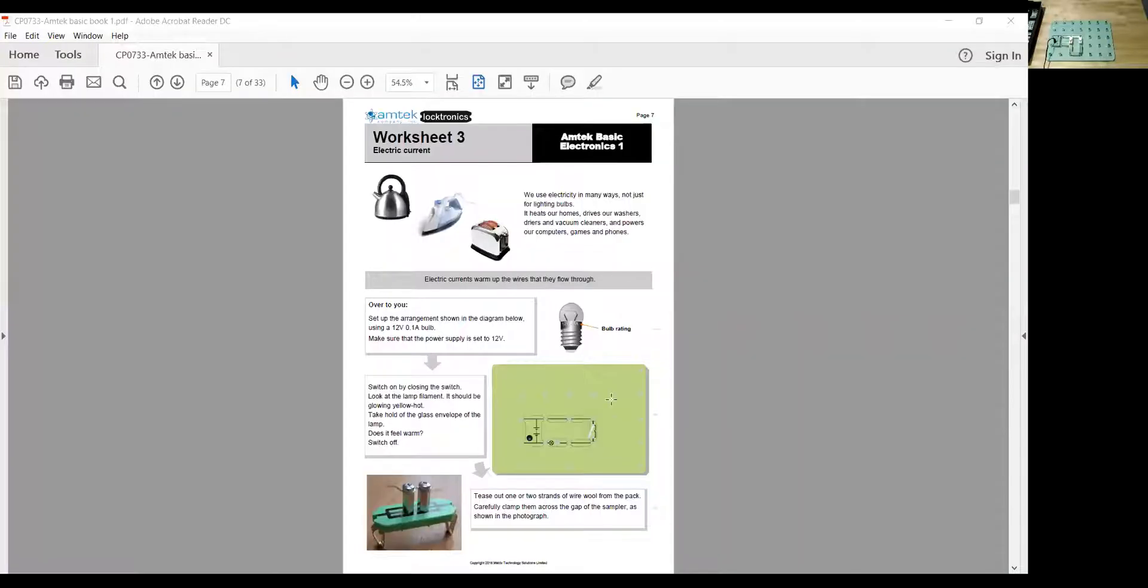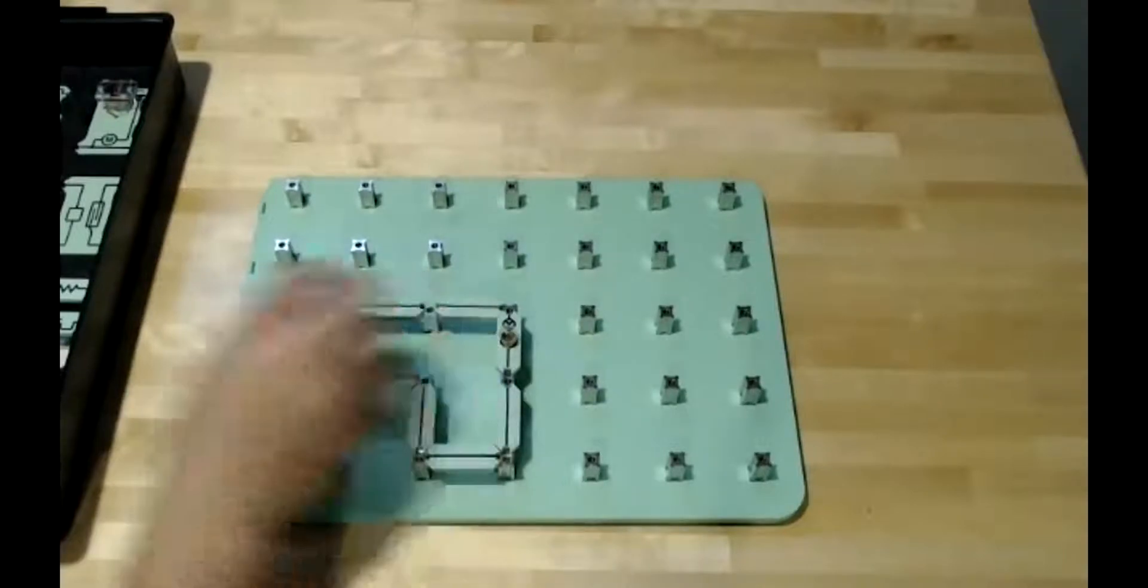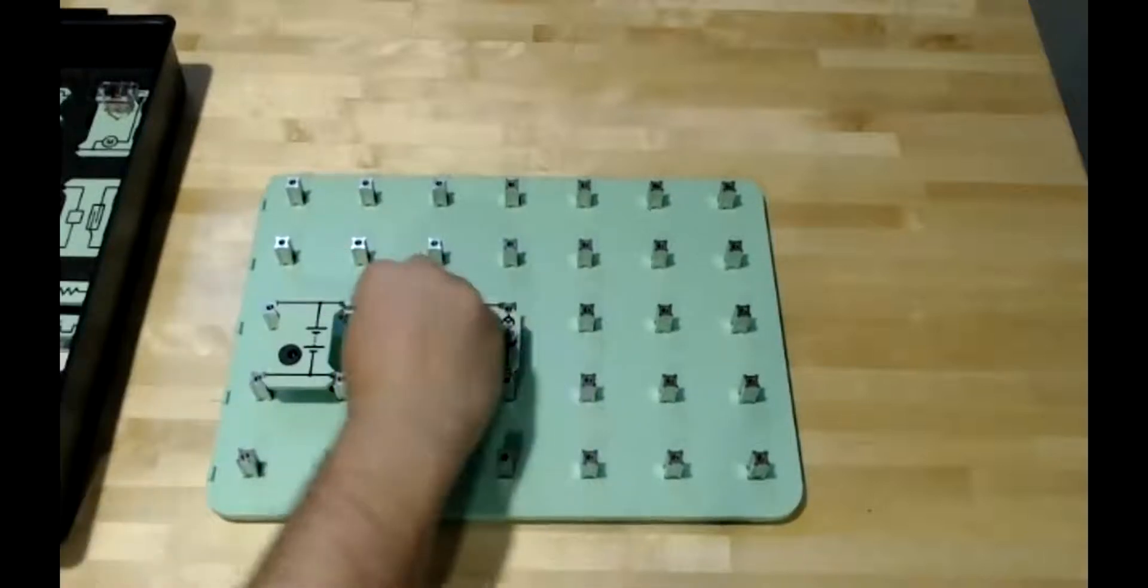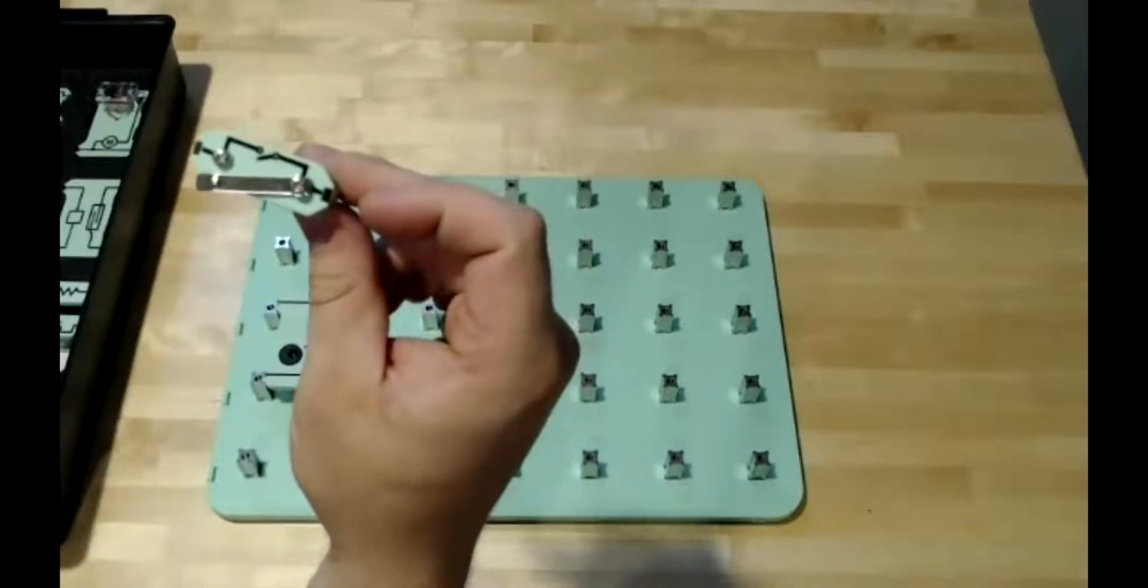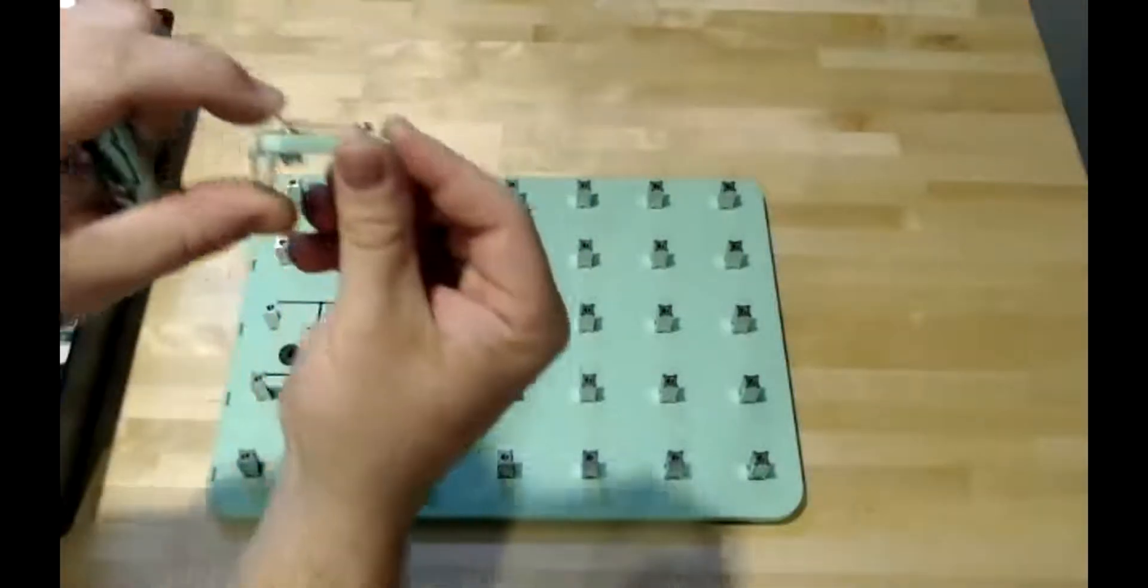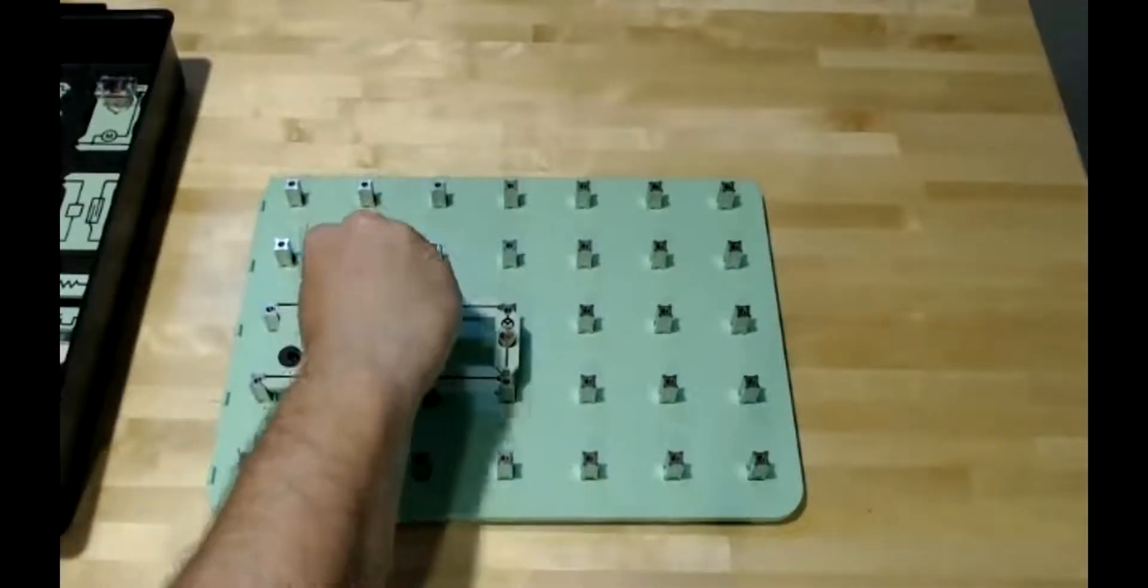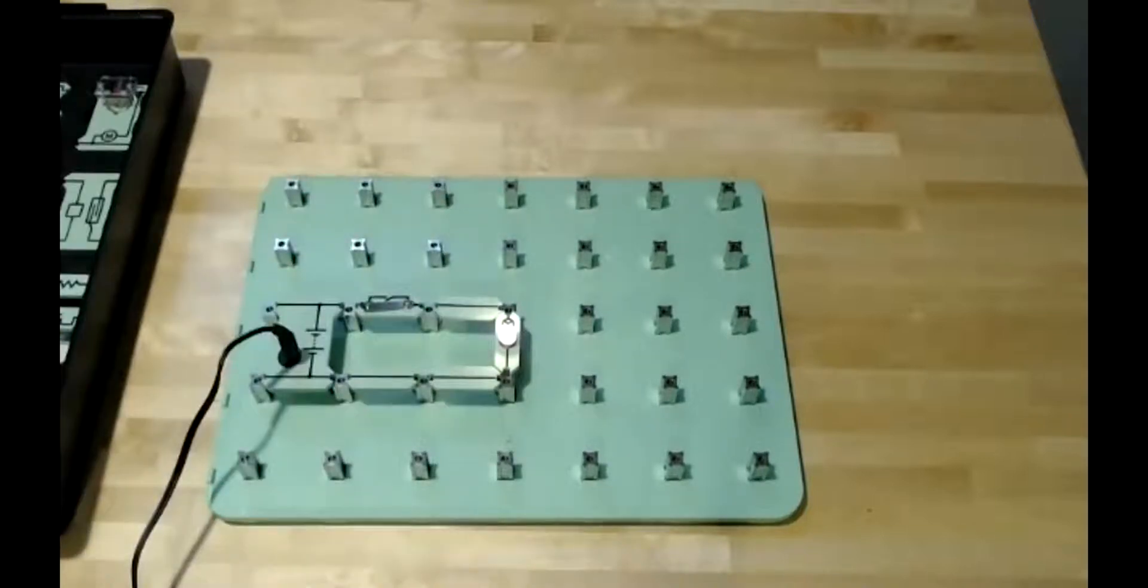All right, so we'll switch back over here like this. Again, the symbol here for switch right there. There's also this type of switch, which is just a press button switch—same thing, same idea. All right, there's my circuit, and the switch turns a light bulb on.